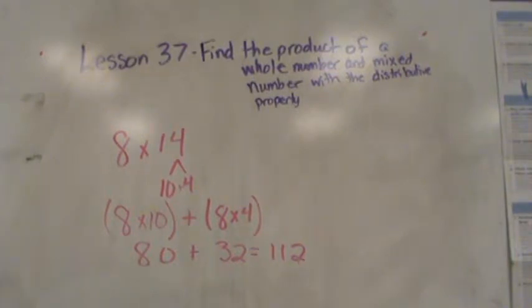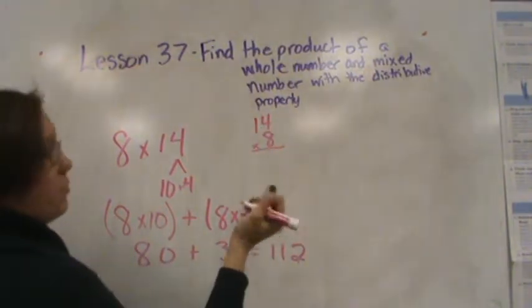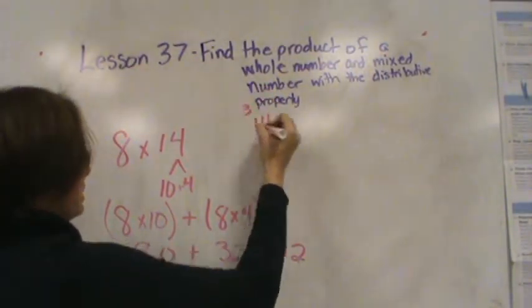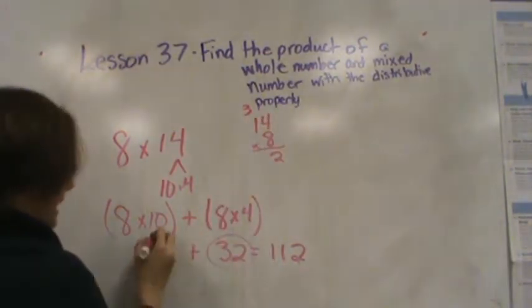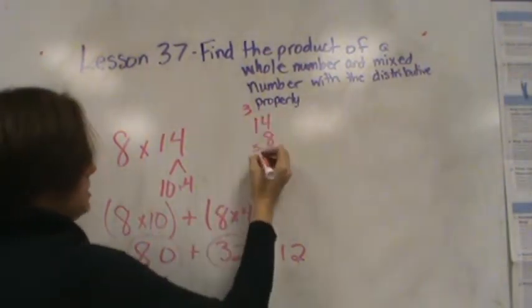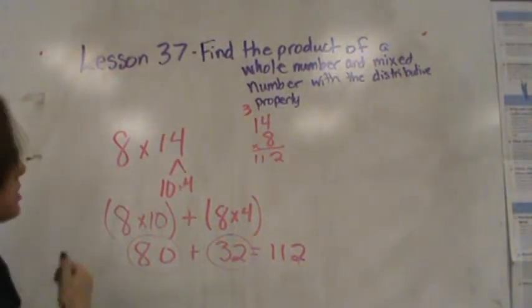So if we did our standard algorithm to check, we would see that works. 8 times 4 is 32. Look, there's the first number. 8 times 1 is 80. There's the second number. Plus 3 is 112. So the distributive property works with whole numbers.